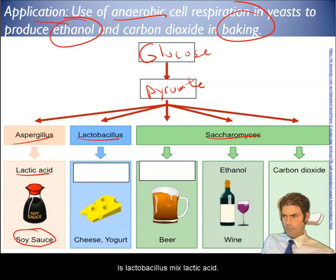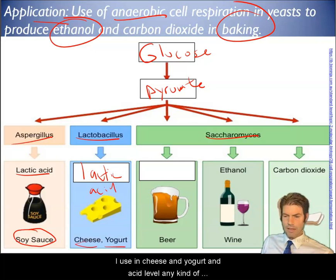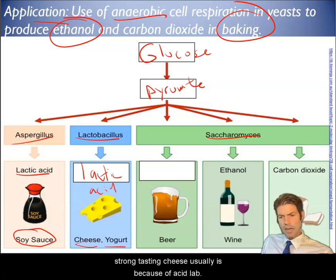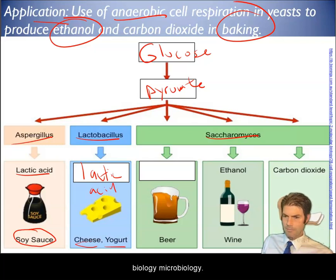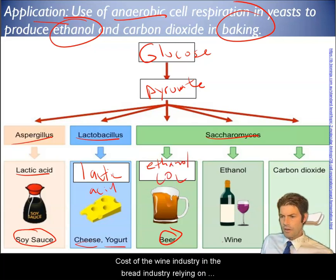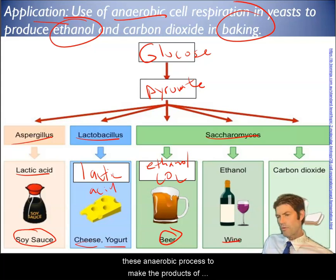This aspergillus makes lactic acid and soy sauce, which I love - so salty though. This lactobacillus makes lactic acid using cheese and yogurt, and the acid level in any kind of strong tasting cheese is usually because of the acid level. Things like beer produce ethanol and carbon dioxide. You also have the wine industry and the bread industry relying on these anaerobic processes.